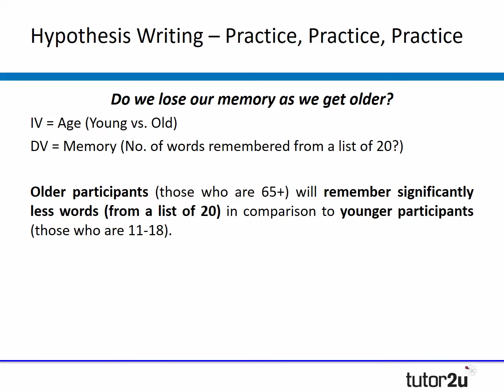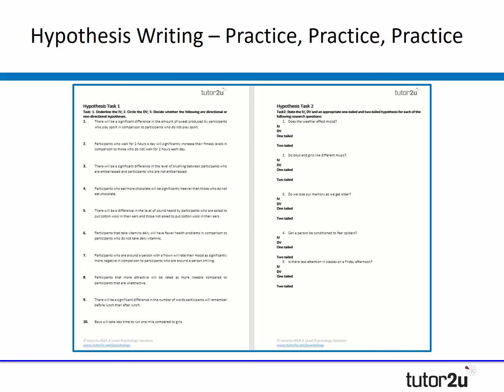Students use their identified IV and DV to turn it into a hypothesis. For example, for 'Do we lose our memory as we get older?': IV is age (young people vs. old people), DV is memory operationalised as number of words remembered from a list of 20. A full hypothesis might read: older participants (those aged 65+) will remember significantly fewer words from a list of 20 in comparison to younger participants (those aged 11 to 18). This has both parts of the IV, an operationalised DV — three out of three. The key with hypothesis writing is to practice as much as possible.